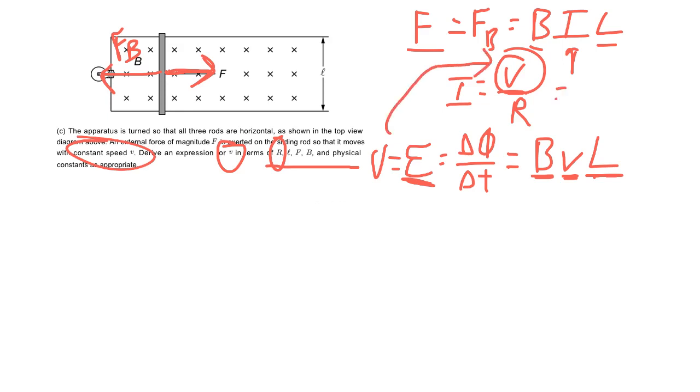...we are going to get what? BVL over R. And then let's go and throw that current way back into the beginning, so let's write this out. We're going to have F equals B and then we're going to multiply that by BVL over R times L.